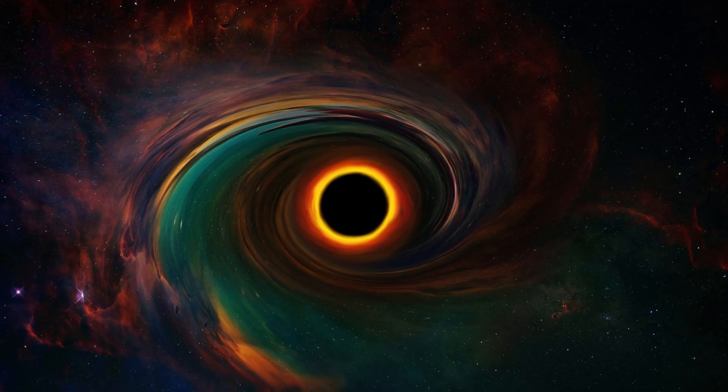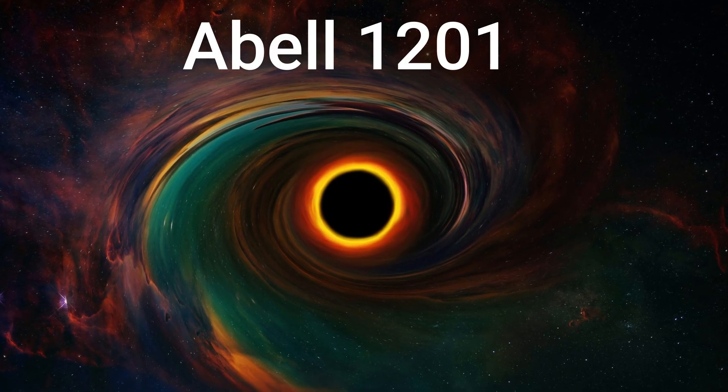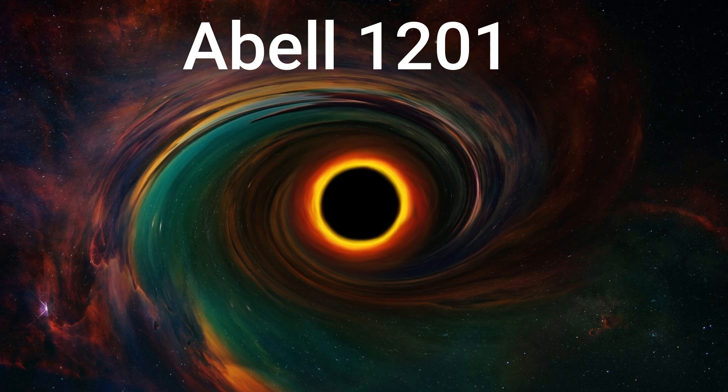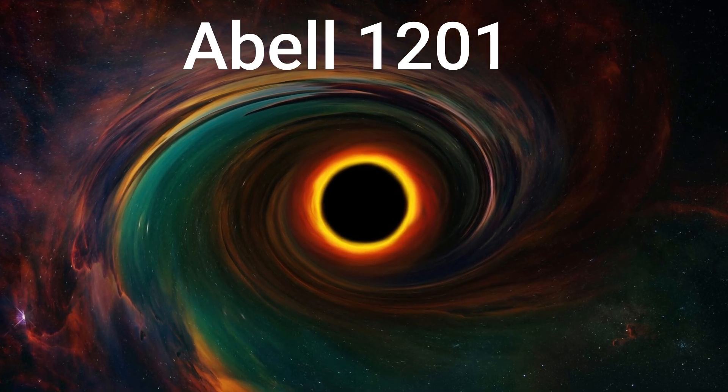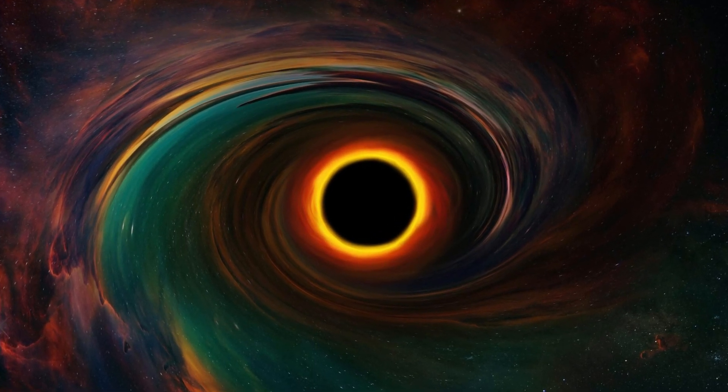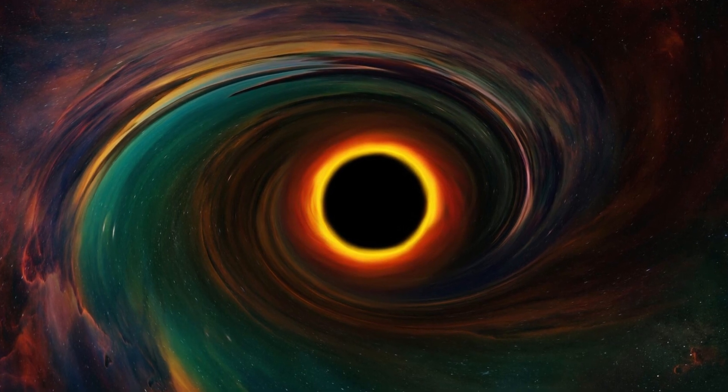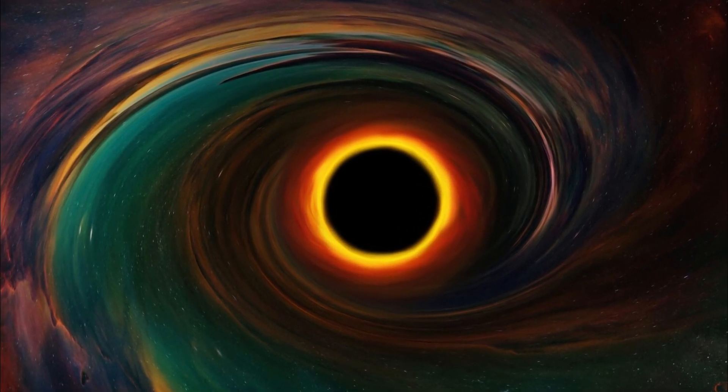Just last year, a black hole in the Abel 1201 galaxy cluster was measured at 32 billion solar masses. So, what's next? Will we find a black hole that makes Phoenix A look like a toddler in comparison?